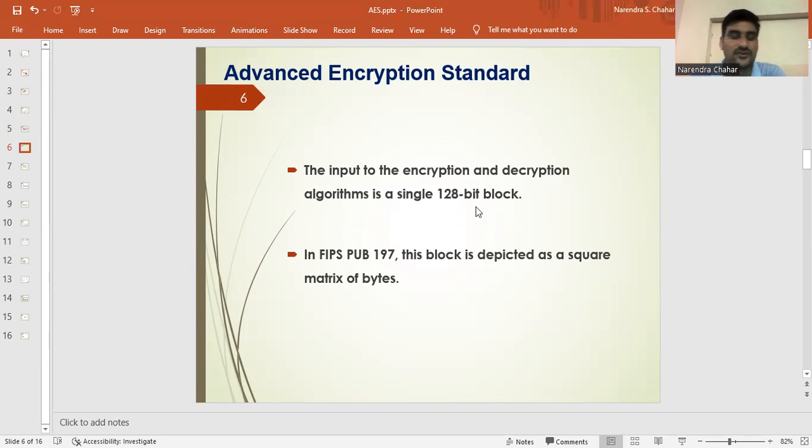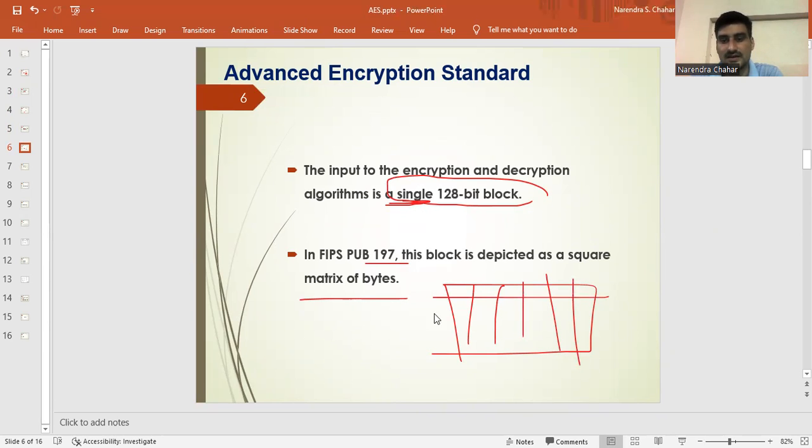What is 128 bits? For the input to the encryption and decryption algorithms, a single 128 bit code. In FIPS publication 197, the block is depicted as a square matrix of bytes. We have to divide all the characters into these blocks.